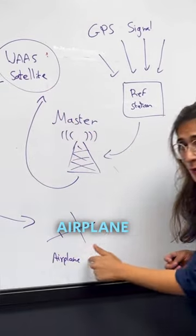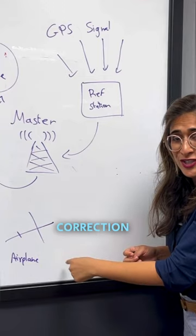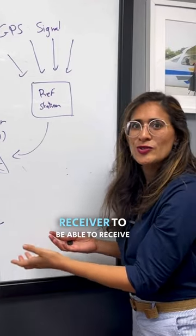The WAAS satellite sends it back to the airplane with the measurement, with the correction. Do we need to have a WAAS receiver to be able to receive it?